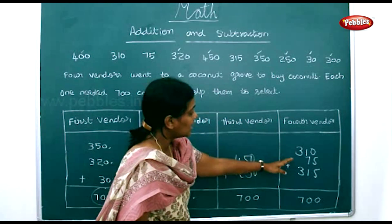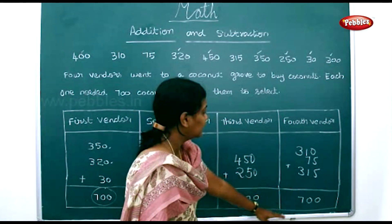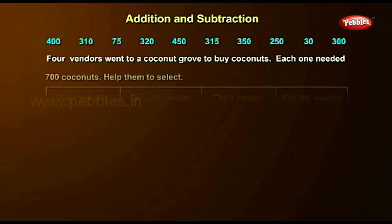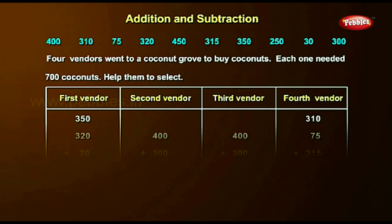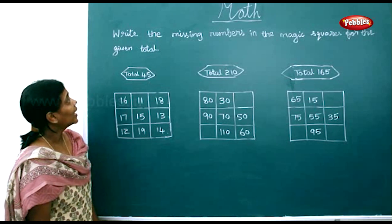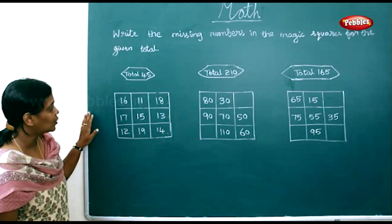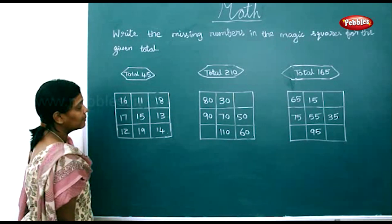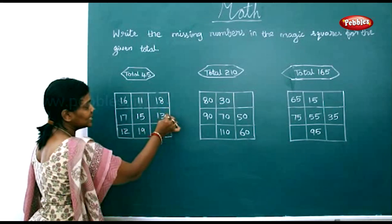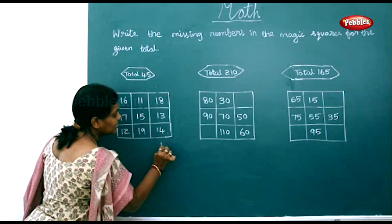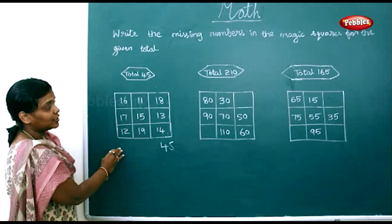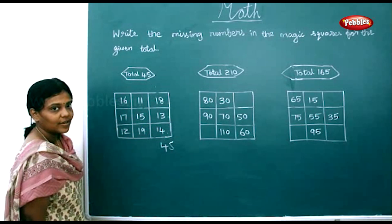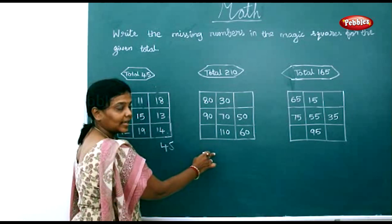If you count these three numbers they will form 700. In the same way, if you add these three numbers also you will get 45. We're going to find the total for 210.